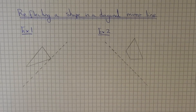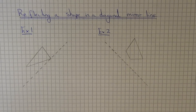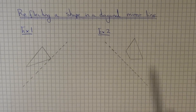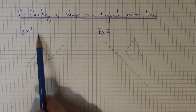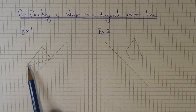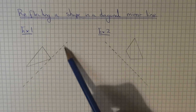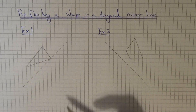Today I am going to show you a couple of examples on how to reflect any shape in a diagonal mirror line without using any tracing paper. Let's look at example one. We need to reflect this triangle in this diagonal mirror line.